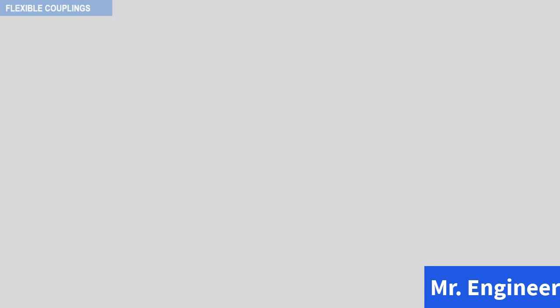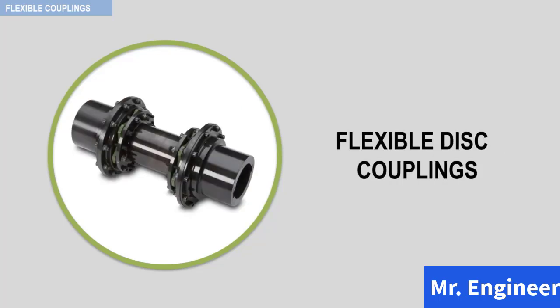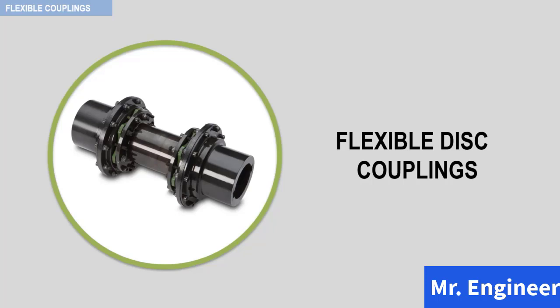The first type of coupling is the gear coupling. These couplings could have continuous lubrication or can be grease packed. The second type is flexible membrane or flexible disc couplings, which could be either single membrane type or multiple membrane or multiple disc type. And finally, the last type is the elastomer couplings — couplings with elastomer insert flexible drive members.